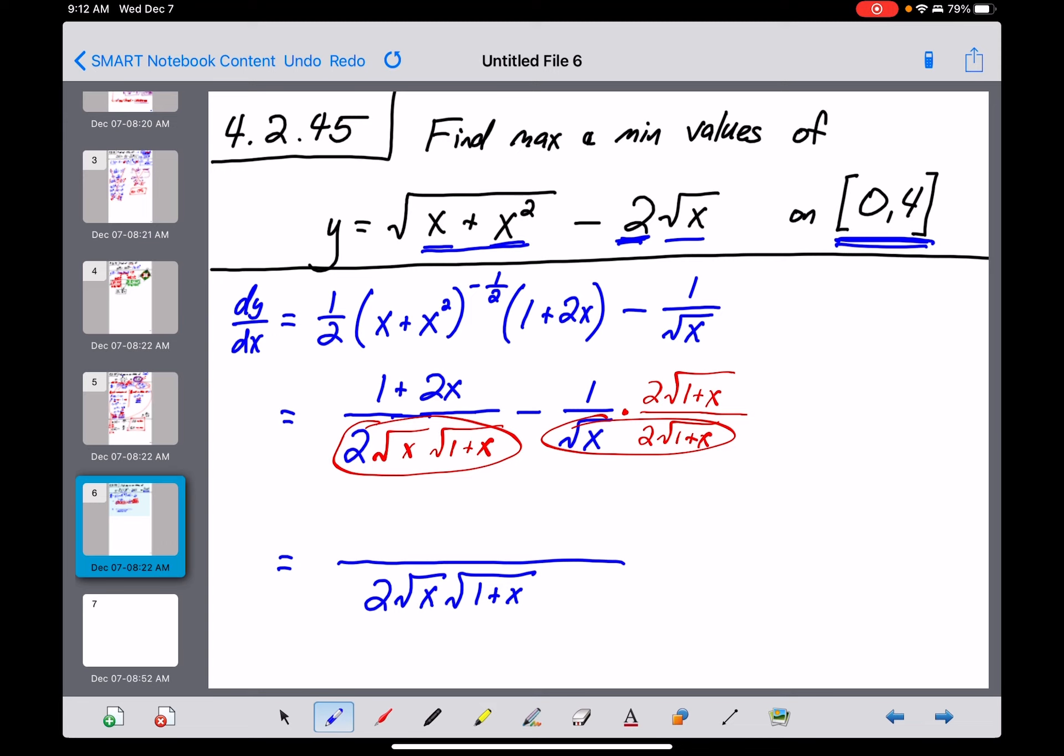And then in the numerator, we've just got the one plus the two x right there, and then a minus two times the square root of one plus x. I don't think there's anything we can do to simplify that numerator. So there is our derivative written as one big ugly fraction.